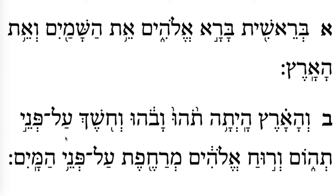And this is munach. Munach says 'munach.' Both words are going to have this symbol. And this is an etnachtah. So this is 'tehom.' Munach is a connector — it connects this phrase to the word right here: 'on the face of... the deep.' So this is 'al-penei tehom.'